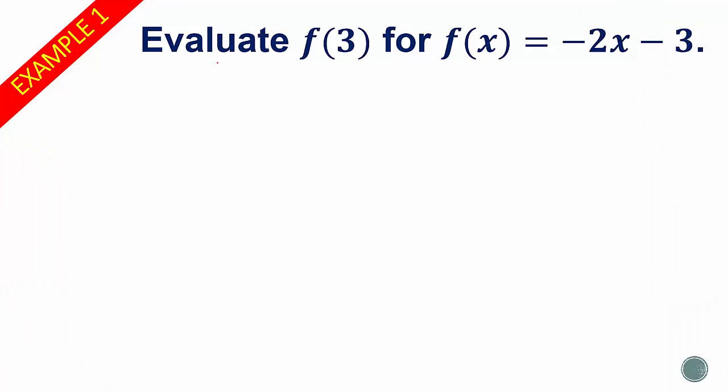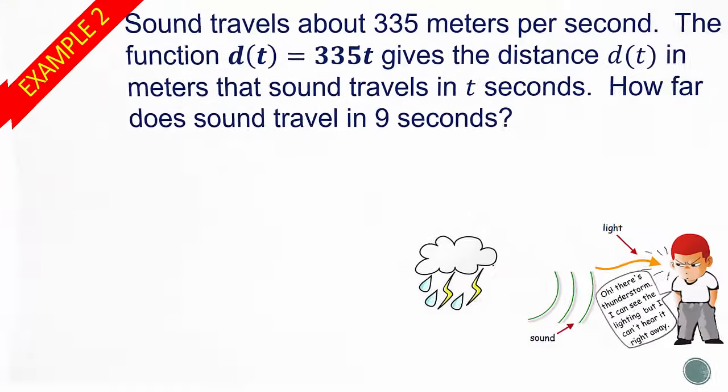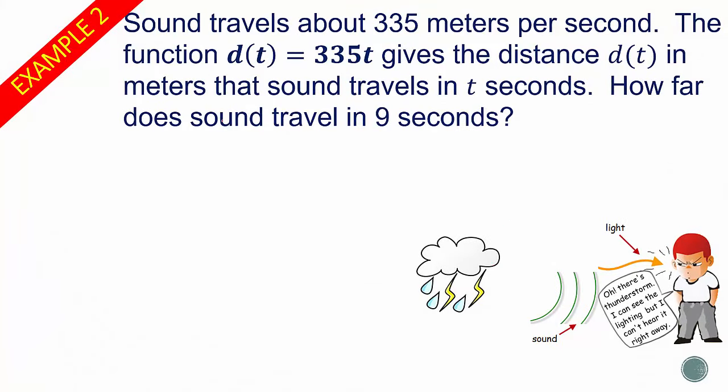So in this example, evaluate f(3) for f(x) equals negative 2x minus 3. So what we're going to do is write that f(3) again, negative 2 times 3, because it's negative 2 times x, minus 3. So f(3) equals negative 9, because this here is negative 6. Negative 2 times 3 is negative 6. Negative 3 minus 3 is negative 9. Second example.